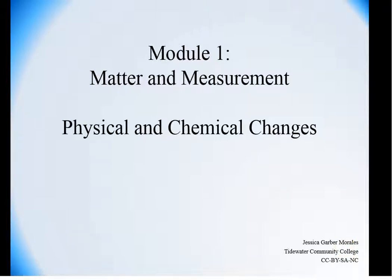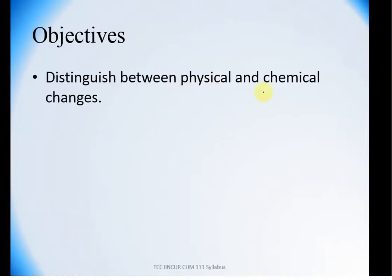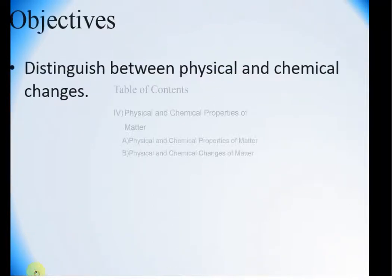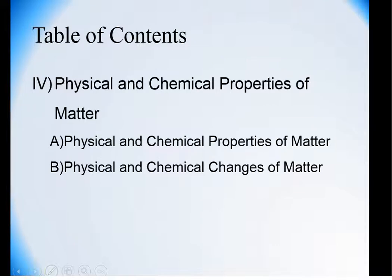We were just talking about states of matter and how pure substances can only be separated by chemical methods, and mixtures can be separated by physical means. It's really important we take a minute to define what that means. We're going to distinguish between physical and chemical changes in this video, starting with chemical and physical properties and then looking at how those properties can be used to change matter.